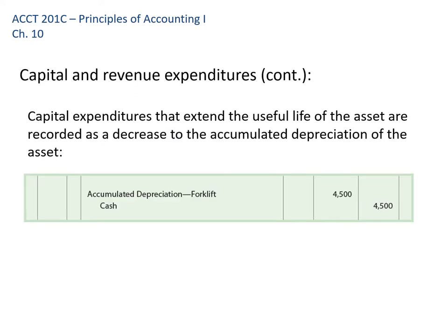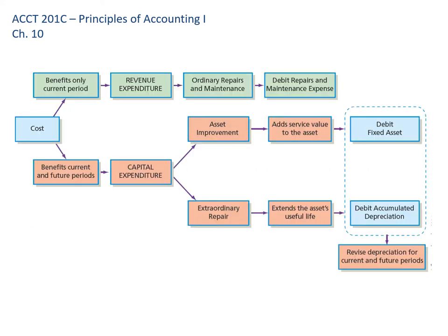The other type of capital expenditure extends the useful life of the asset. For example, instead of just changing the oil, say we have the engine or transmission completely rebuilt — now that vehicle will last a lot longer than originally. In that case, we debit accumulated depreciation, which increases the book value of that asset and gives us room to depreciate it over its now-extended life. We credit accumulated depreciation and debit cash. This same information is also shown in a pictorial format for reference.